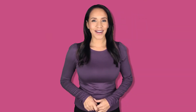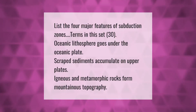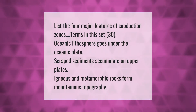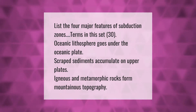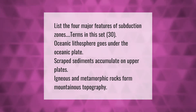List the four major features of subduction zones. Terms in this set: oceanic lithosphere goes under the oceanic plate, scraped sediments accumulate on the upper plate, igneous and metamorphic rocks form, and mountainous topography.